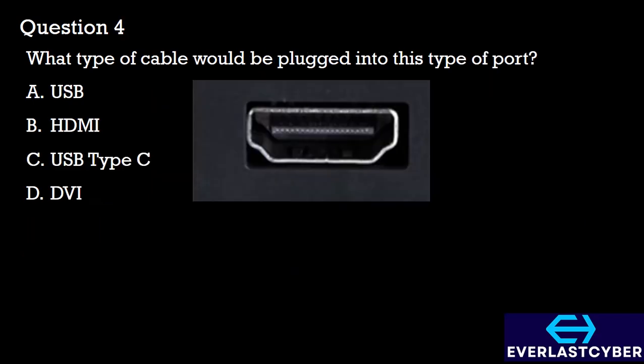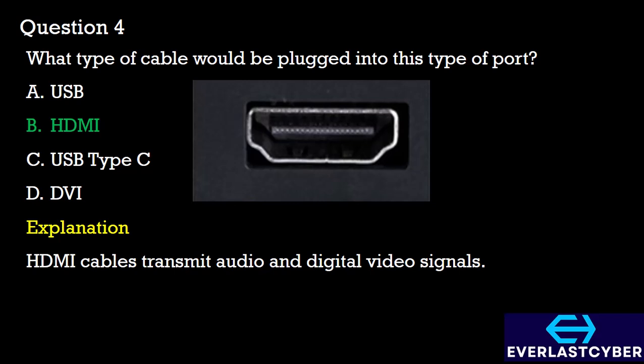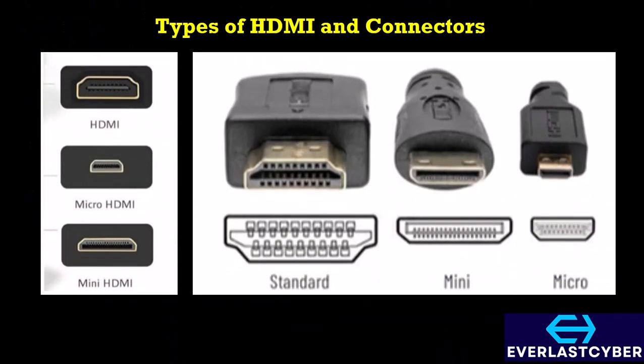Question 4: What type of cable would be plugged into this type of port? A. USB, B. HDMI, C. USB Type-C, D. DVI. For this kind of port, the answer is Option B, HDMI. HDMI cables transmit audio and digital video signals. We have the standard HDMI connectors, as well as micro HDMI and mini HDMI connectors, and they are all used to transmit audio and digital video signals.